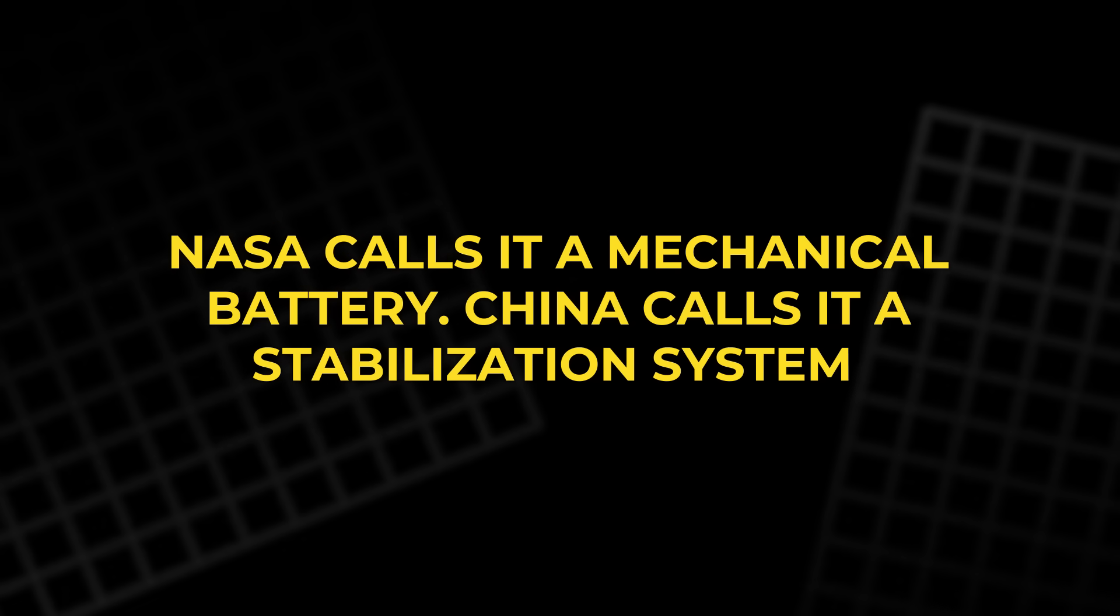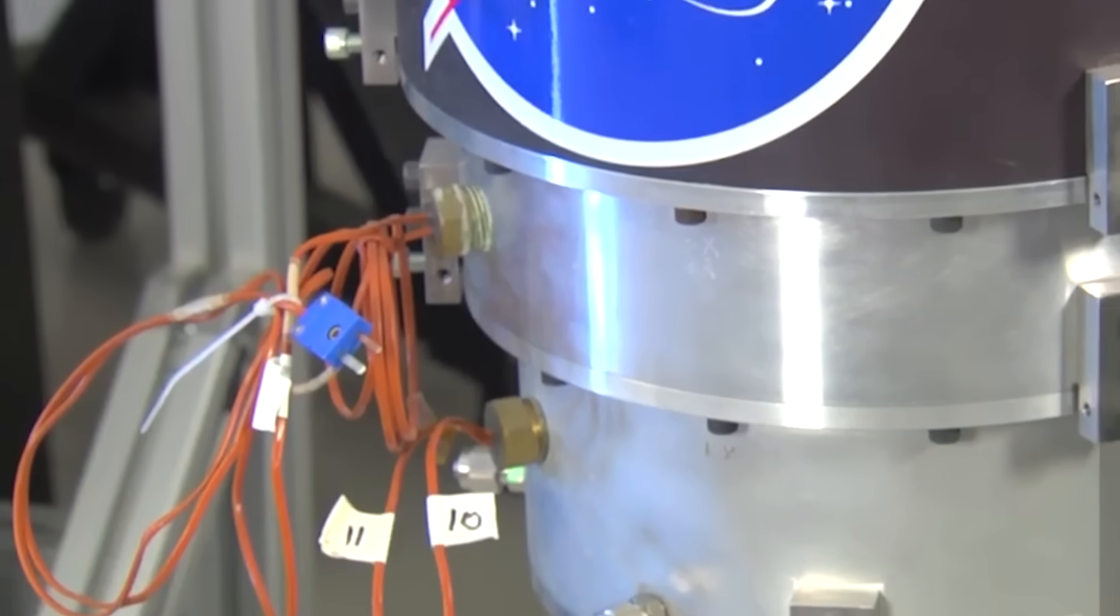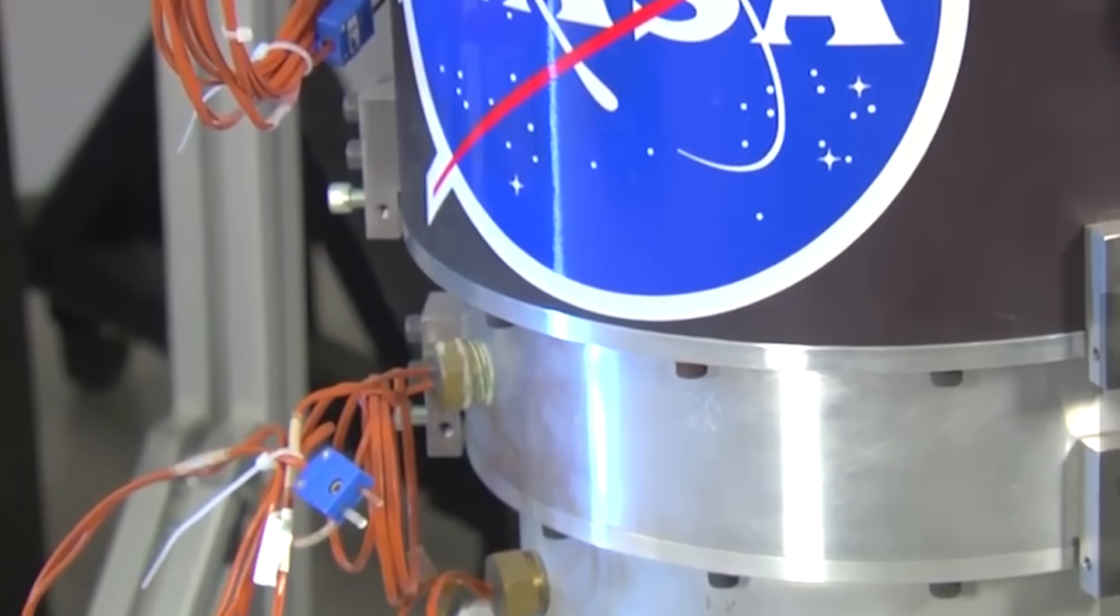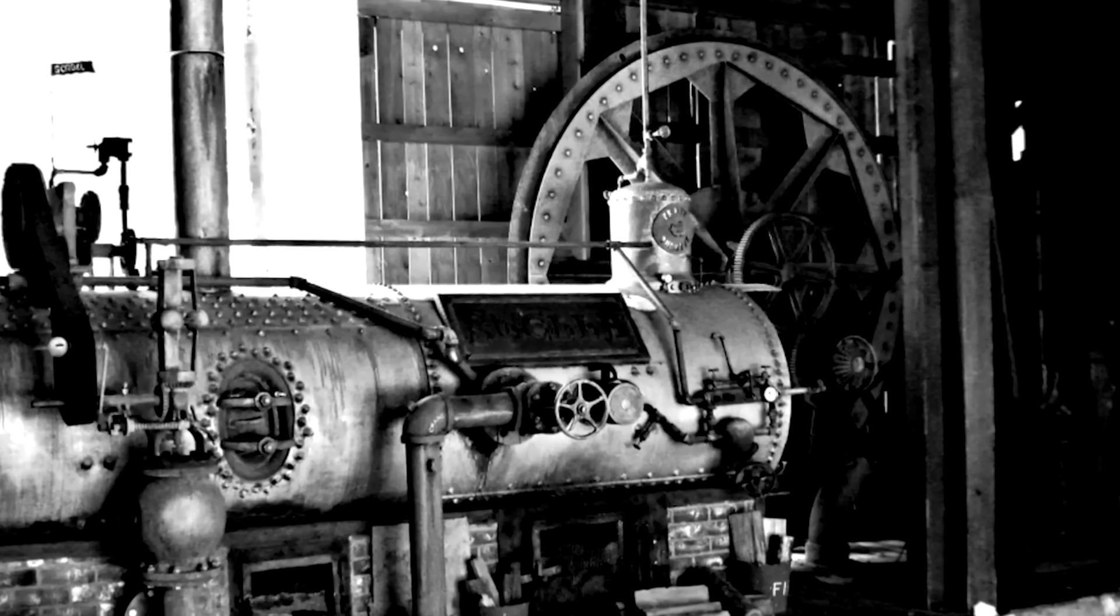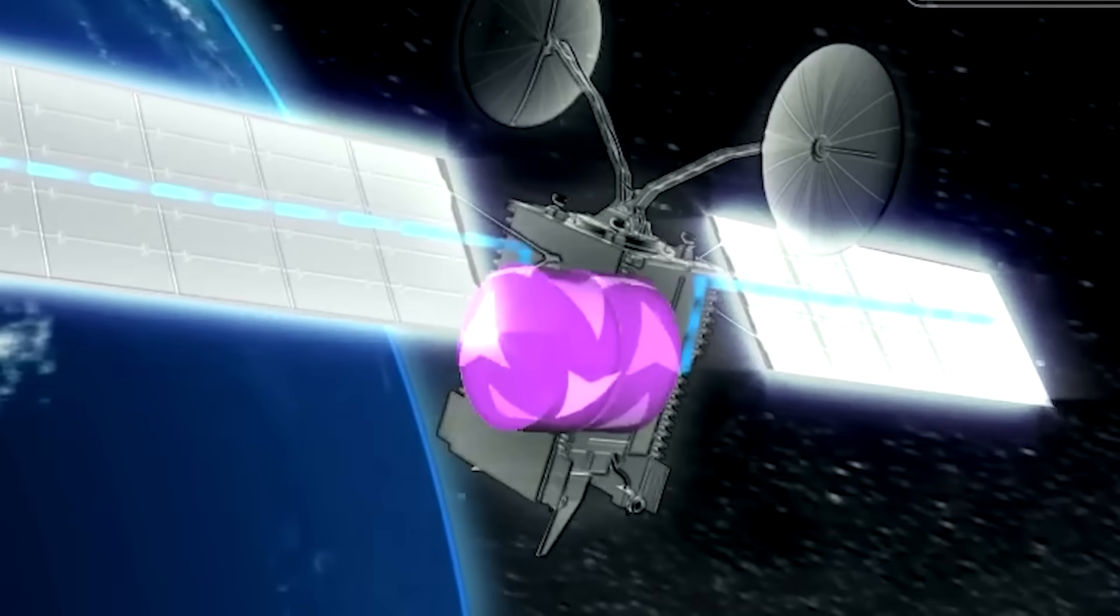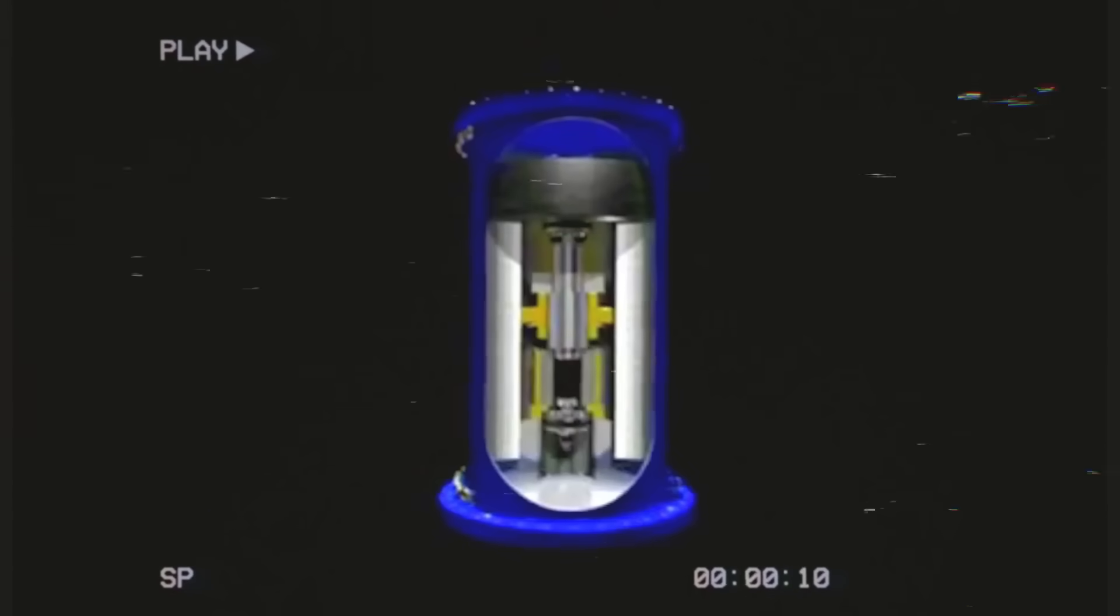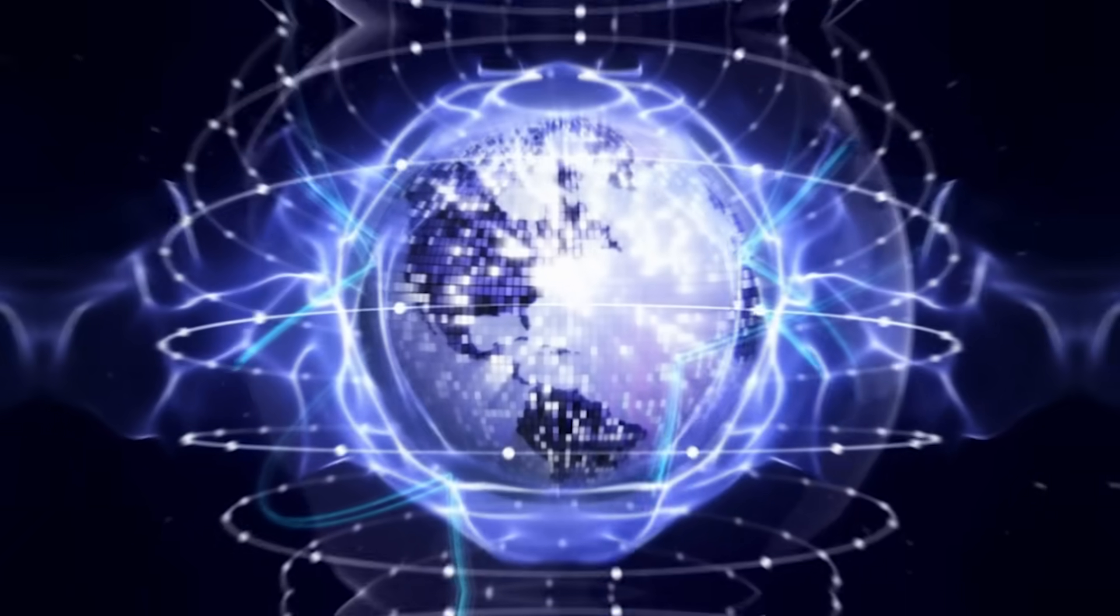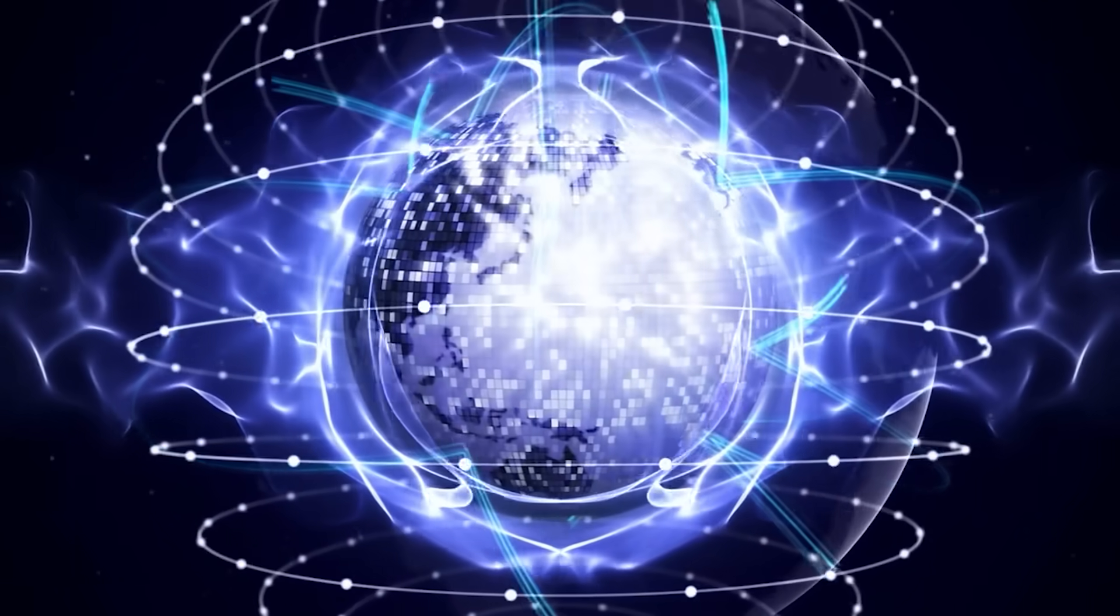And yet every clue leads back to the same spinning wheel. NASA calls it a mechanical battery. China calls it a stabilization system. Taurus calls it a mini power station. But behind the labels, the physics is the same: a massive rotor storing motion with almost no loss, producing power on demand, potentially forever. If all three are converging on the same technology, maybe we're not looking at a coincidence. Maybe we're witnessing the beginning of a revolution, one too dangerous to announce.